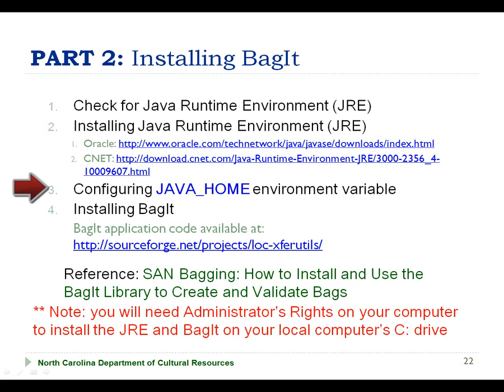In step 3, I will demonstrate how to configure and view the Java home environmental variable, which will be of interest even if your IT support representative installs the JRE and BAGIT programs for you. In step 4, I will demonstrate how to install the BAGIT program itself. You may want to download the BAGIT user guide, as these steps will also be documented there, and may help you to follow along as I proceed through the demonstration.